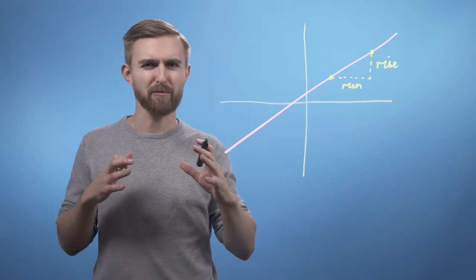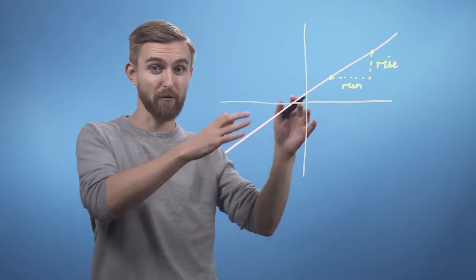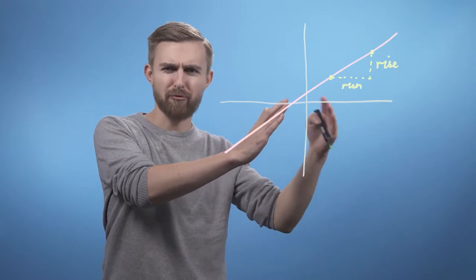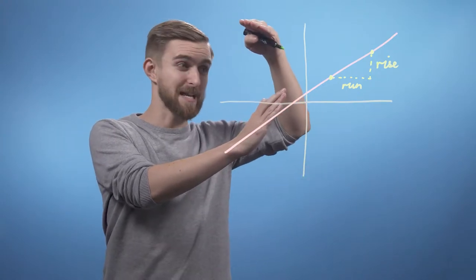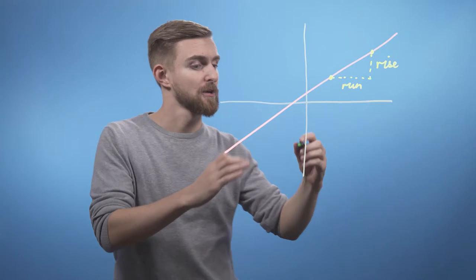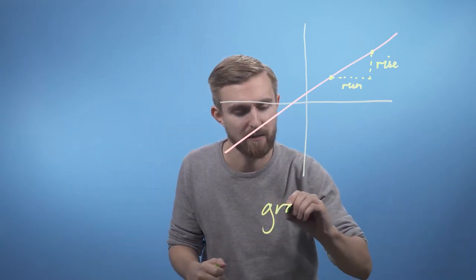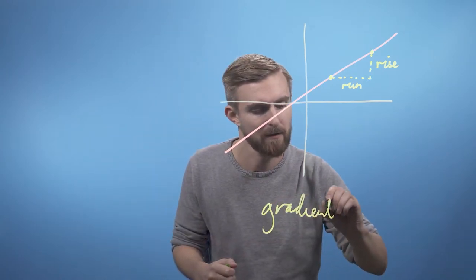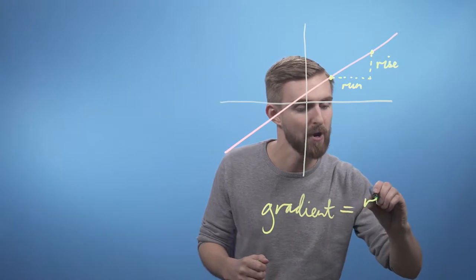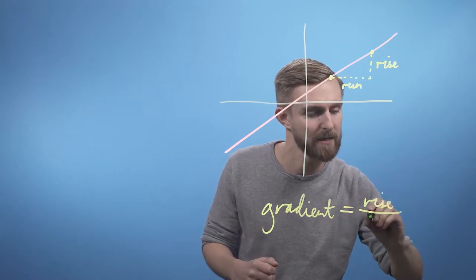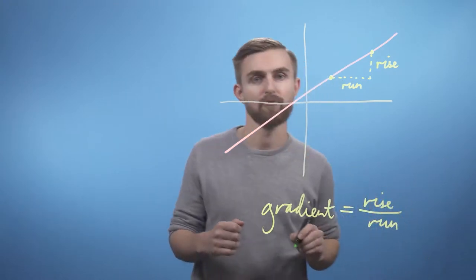If our function was sloping down, and we pick points at the same horizontal locations, then our run would be the same, but our rise would now be negative. So, our gradient equals rise divided by run.